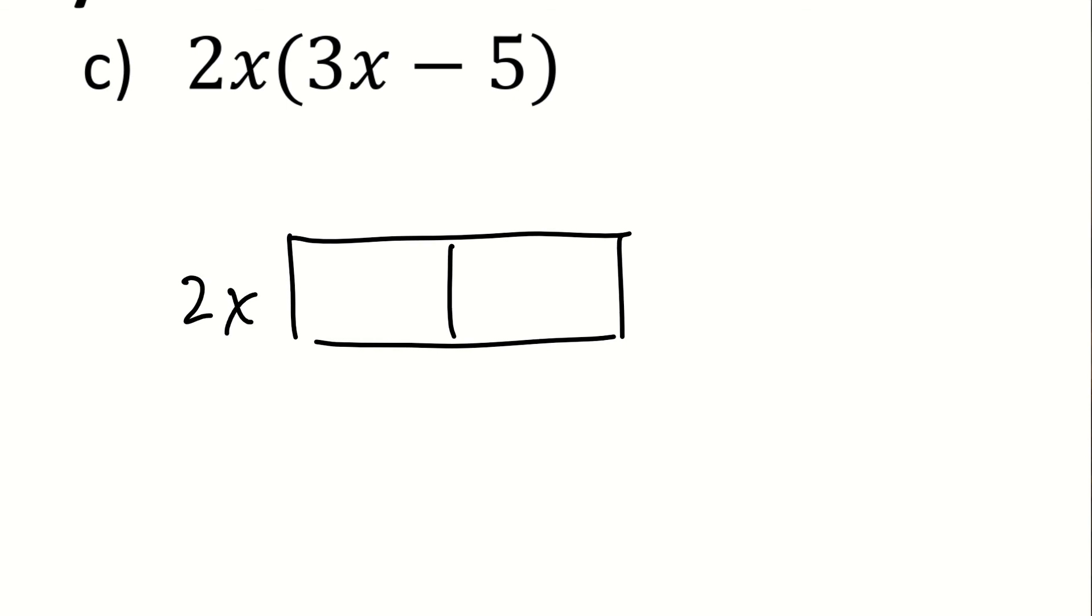But if I was to write one, it would be a 2x, and I'm multiplying that by a 3x and a negative 5. 2x times 3x is 6x to the second power. And then 2x times negative 5 is negative 10x. So this product is the same as 6x squared minus 10x.